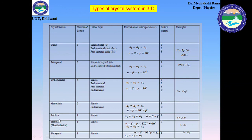For the triclinic crystal system, we have a simple Bravais lattice, with condition a1 ≠ a2 ≠ a3 and α ≠ β ≠ γ. For trigonal (also called rhombohedral), the Bravais lattice is simple type, with condition α = β = γ < 120° but ≠ 90°, and a1 = a2 = a3. For hexagonal, the Bravais lattice is simple type, with condition α = β = 90°, γ = 120°, and a1 = a2 ≠ a3.